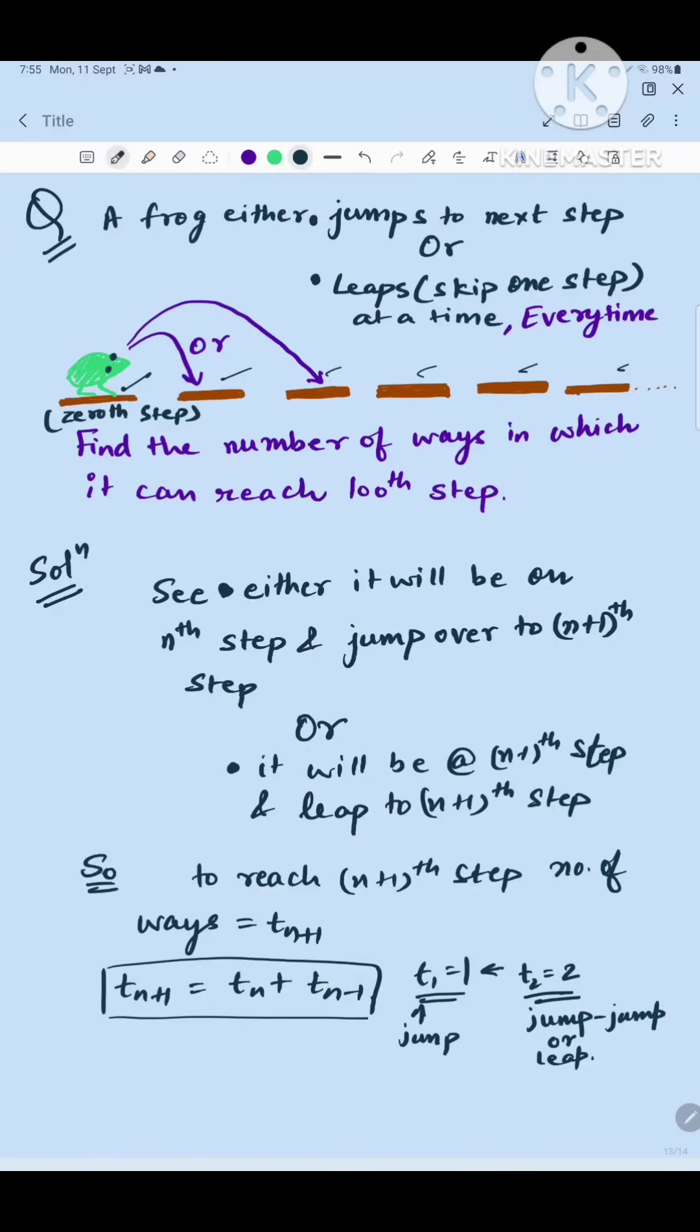And this frog has a habit of either jumping one step ahead or leaping, so leaping this and moving to the 2nd step from it. Now the question asks in how many ways from the 0th step can this frog land to the 100th step.